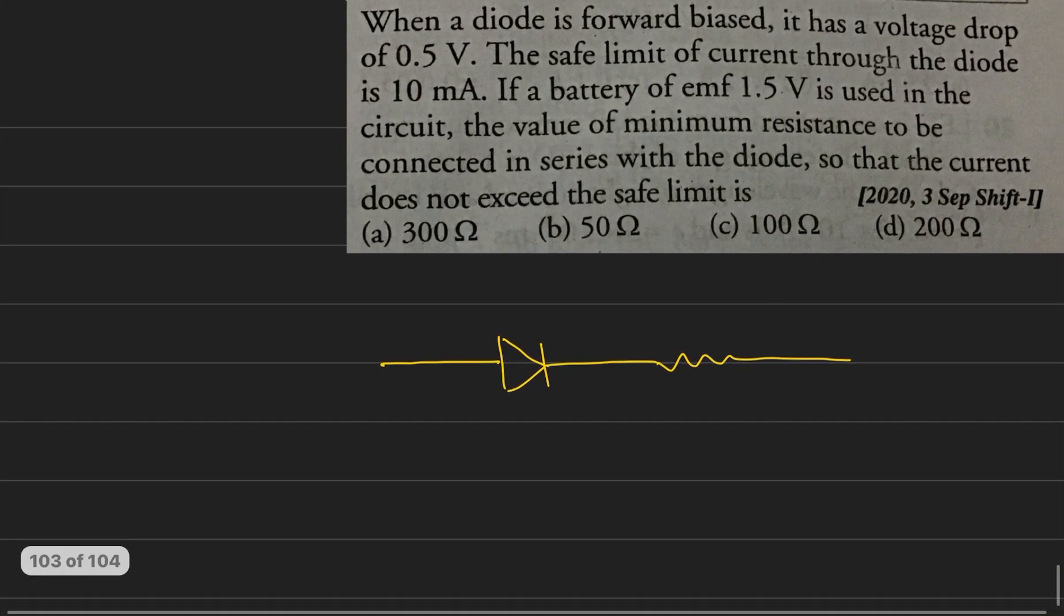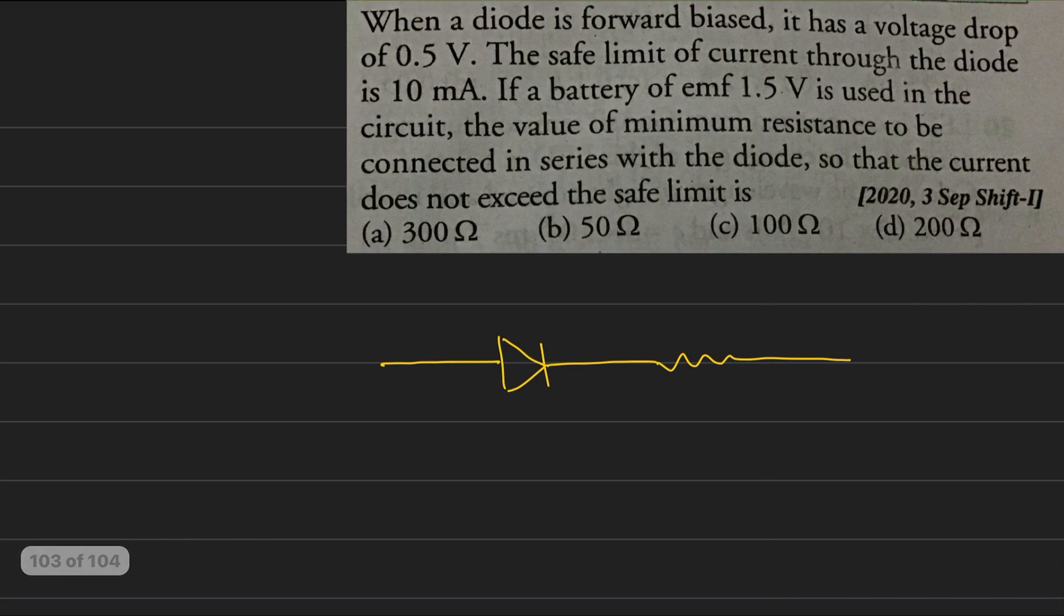We have a diode here, and across this diode the voltage drop is 0.5 volt. This voltage drop means there is a potential barrier. We connect a 1.5 volt battery across this diode.